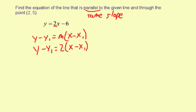And now for the point, this is going to be x1 and y1. So it's y minus 5 equals 2 times in parentheses x minus 2.